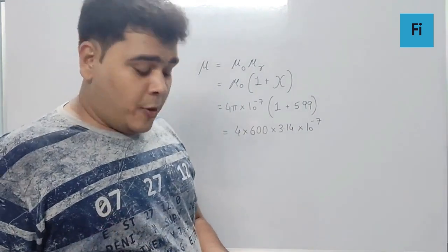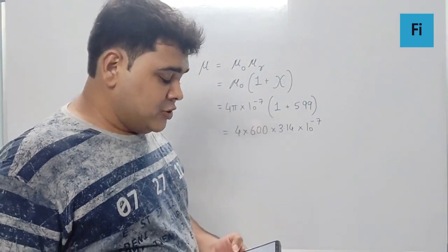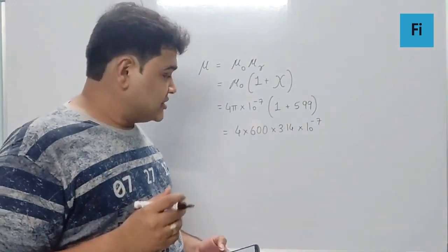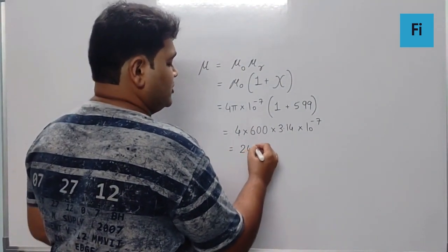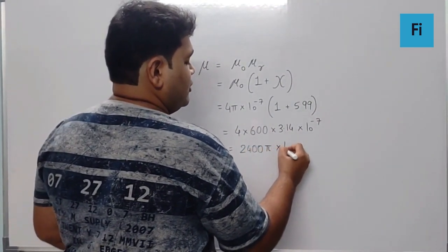Now if we go as per the options given, the options contain the value π as it is. So we can write this as 2400π × 10⁻⁷.